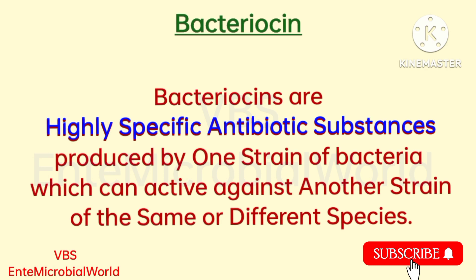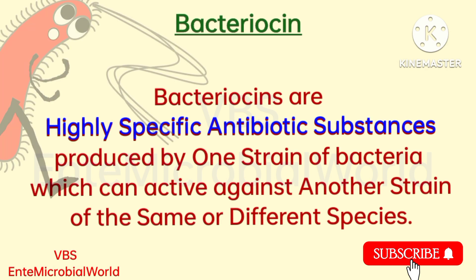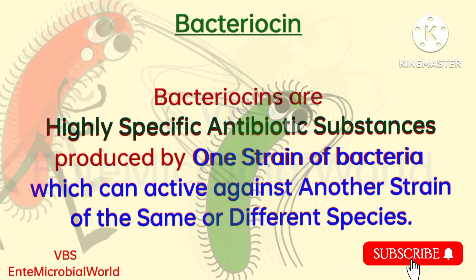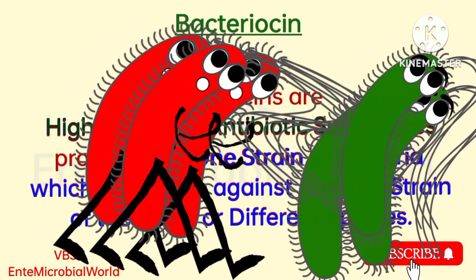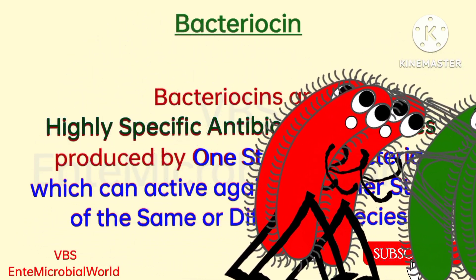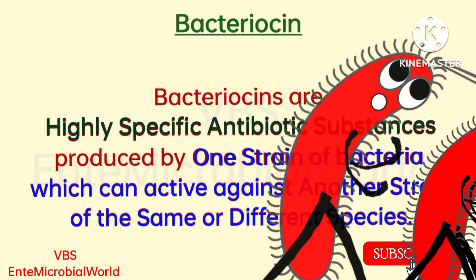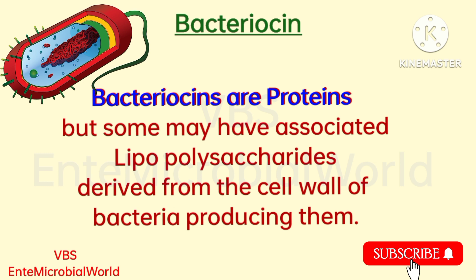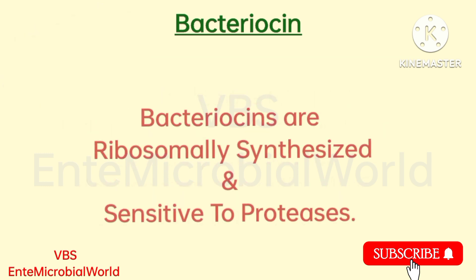Bacteriocins are highly specific antibiotic substances produced by one strain of bacteria which can be active against another strain of the same species or different species. Bacteriocins are proteins, but some may have associated lipopolysaccharides derived from the cell wall of bacteria producing them. Bacteriocins are ribosomally synthesized and sensitive to proteases.